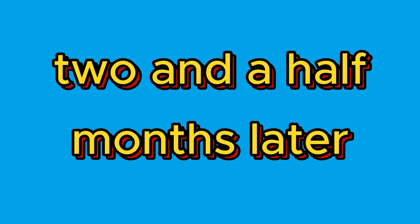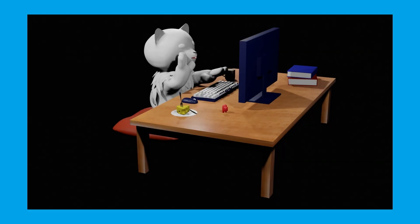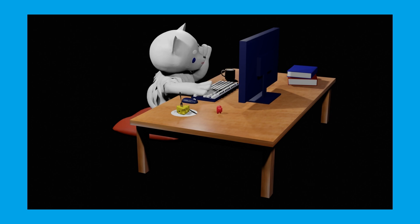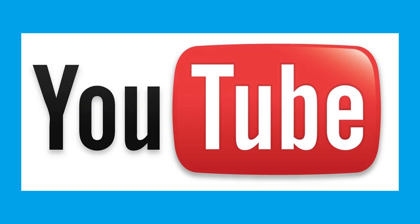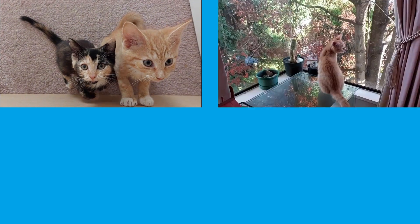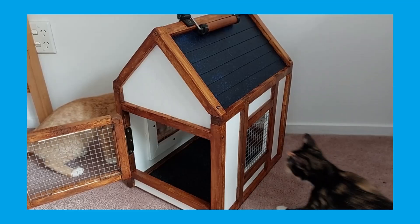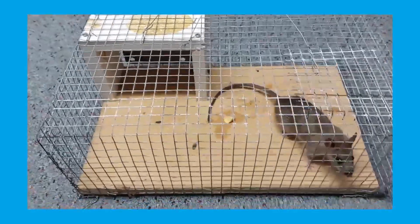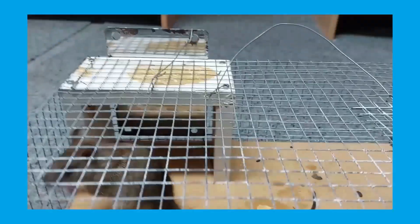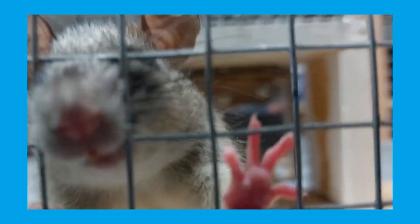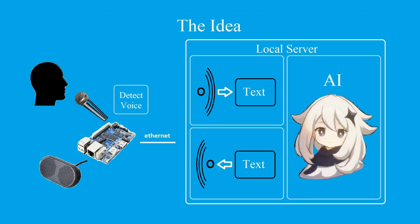This previous part was recorded about two and a half months ago and I've been continuing to work on the AI. I also made a few YouTube videos during that period — we got kittens and I made three videos on that, I made a cat carrier for the kittens, and I uploaded an old video from about two years ago when I was catching a rat. I've kept the same design with the AI and I've managed to narrow down what I'm going to be using for each of the three different components.